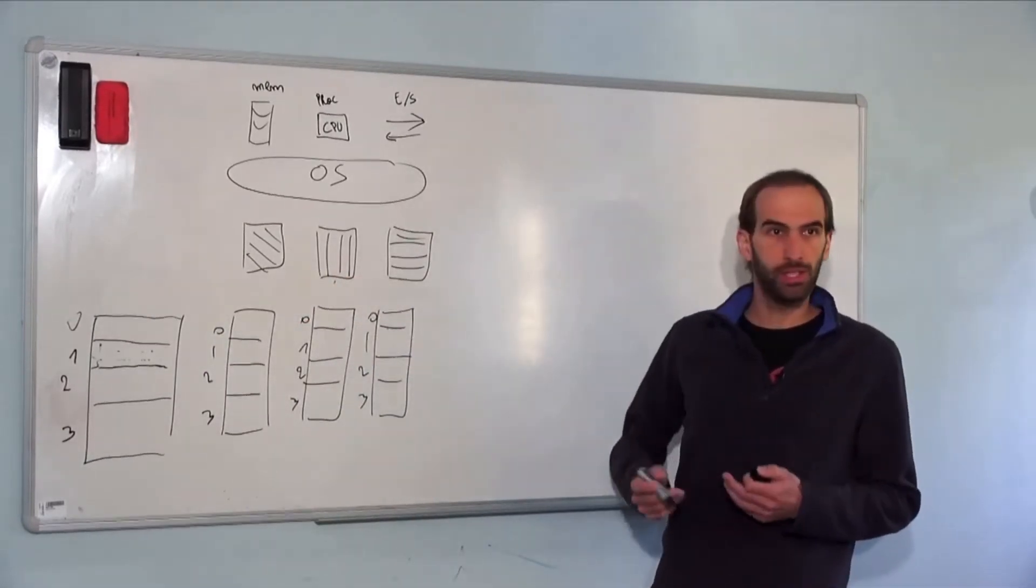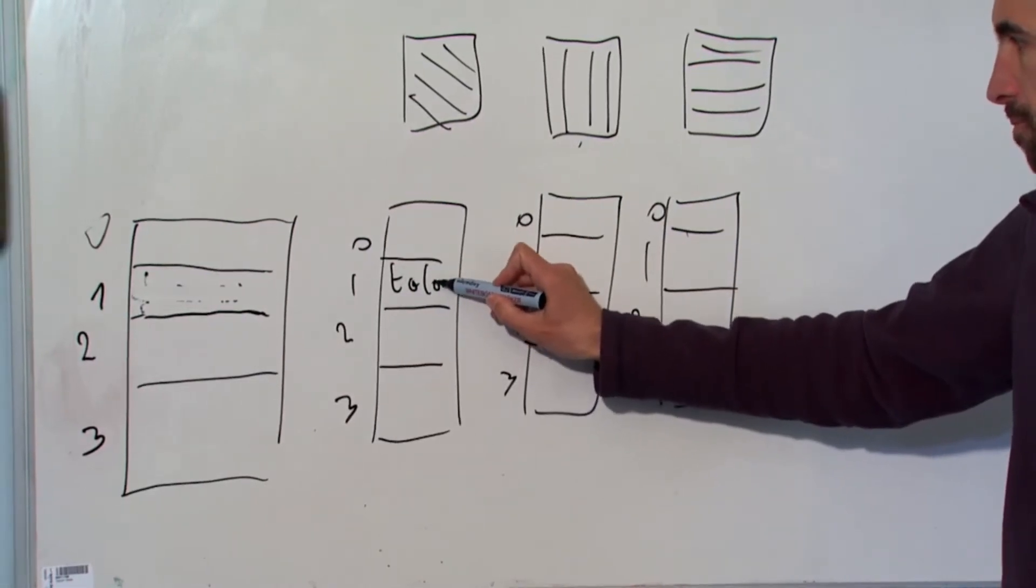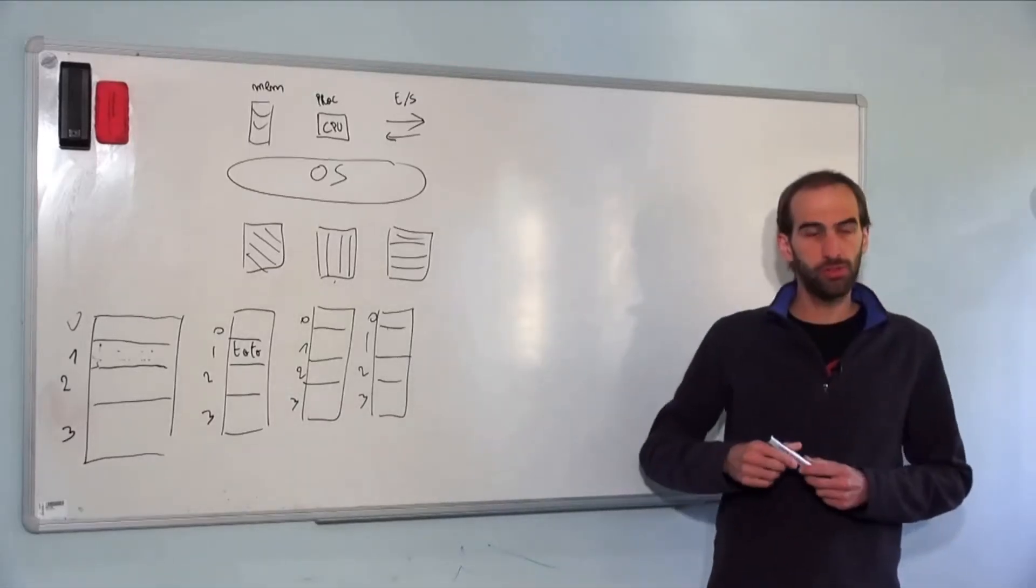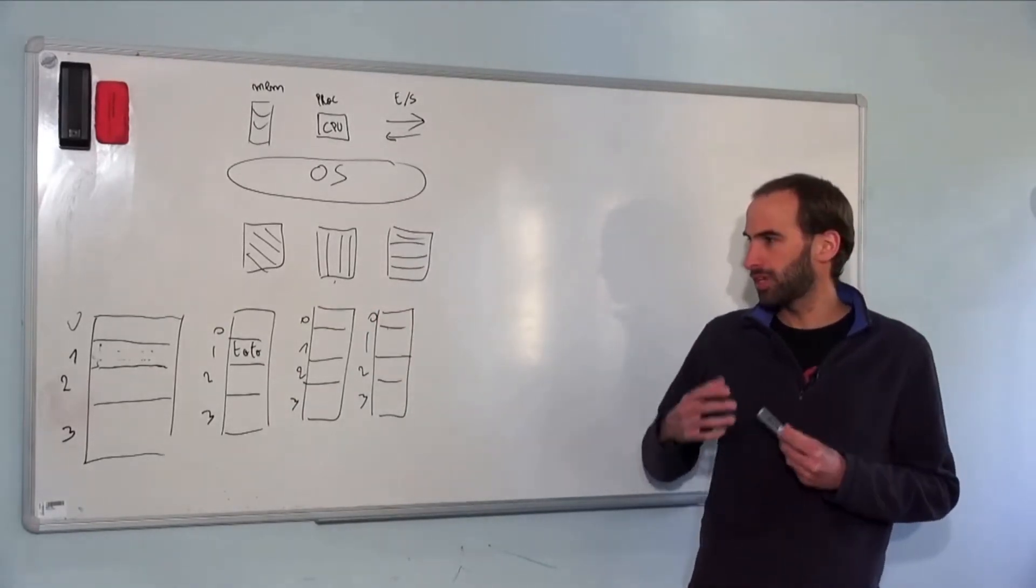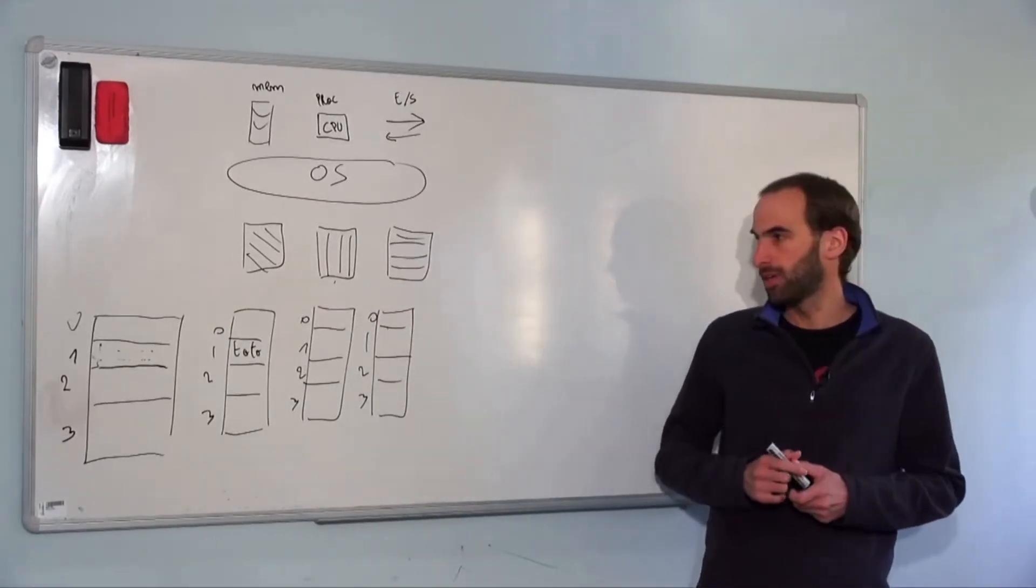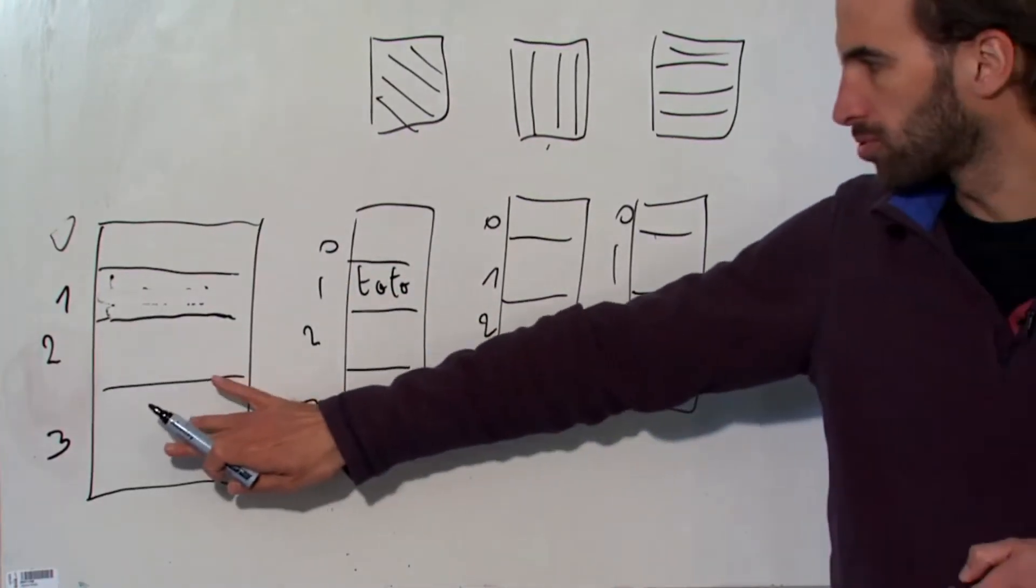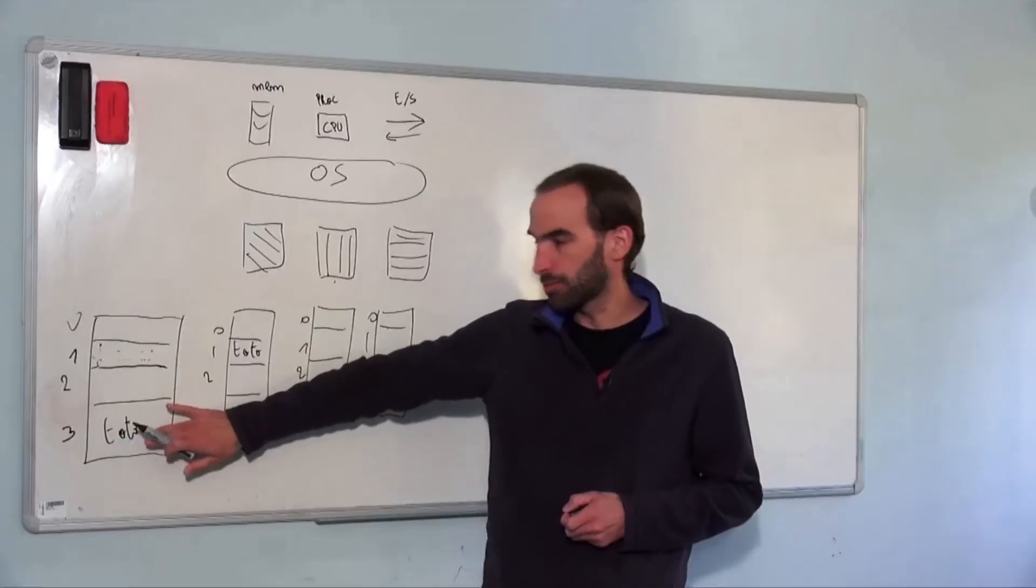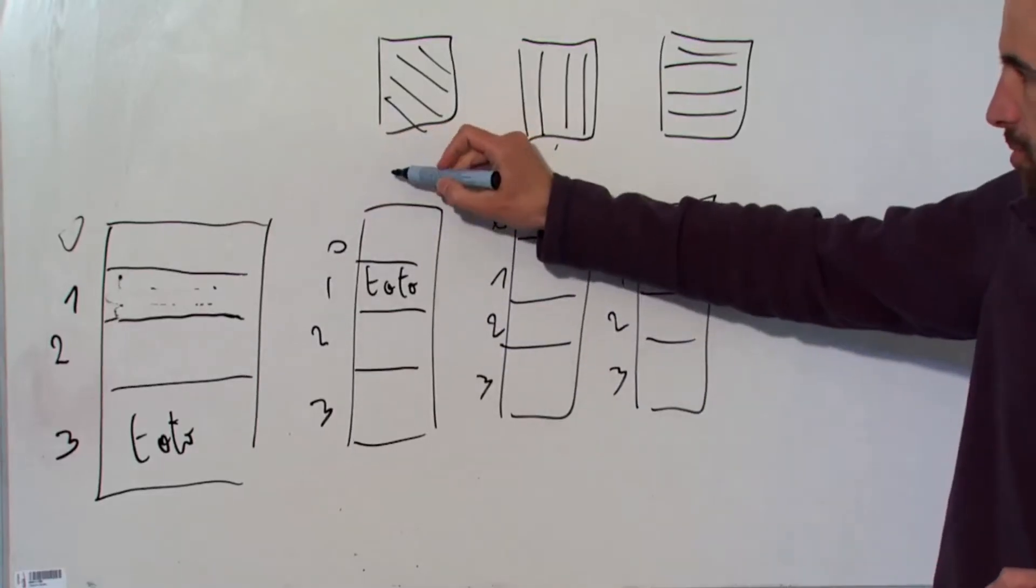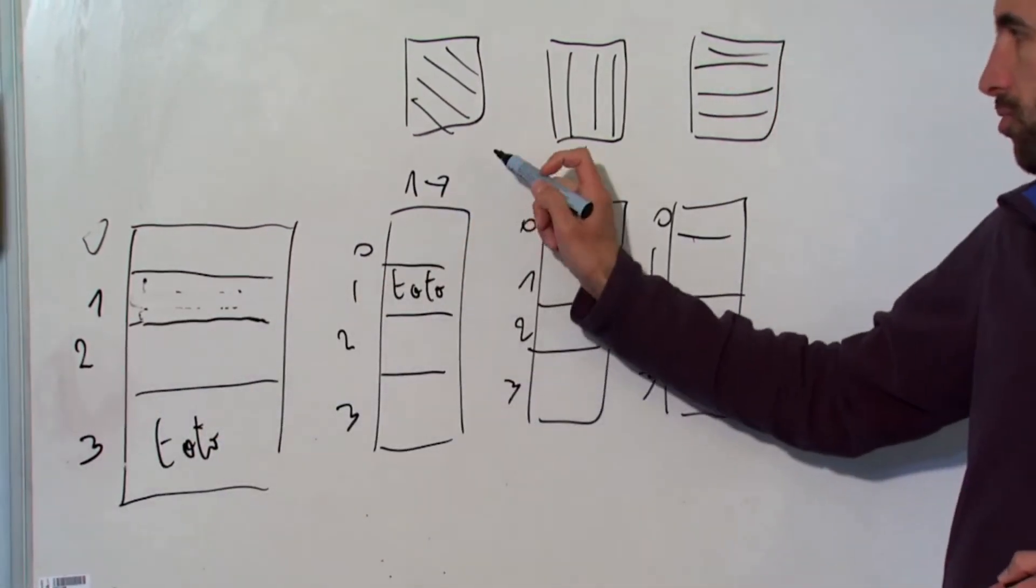For example, it had chosen to write Toto on word 1. What the operating system will do, when it receives a write in memory command from an application, it will convert this. It's going to find a space to write the data in the real memory. For example, it can say I will write the 1 here on word 3 in the memory, so Toto. So it will be written into the physical memory here, and the operating system remembers that the 1 for this application belongs in fact to the memory word 3.